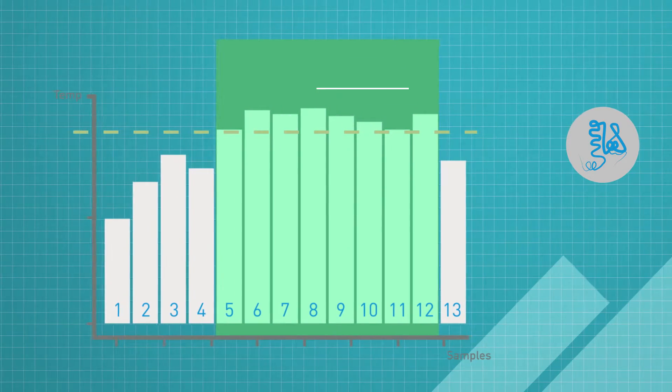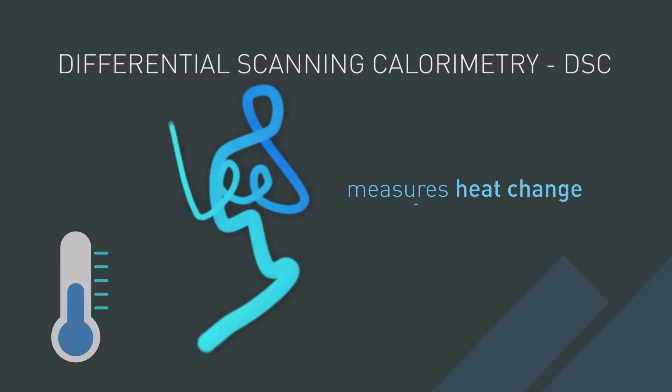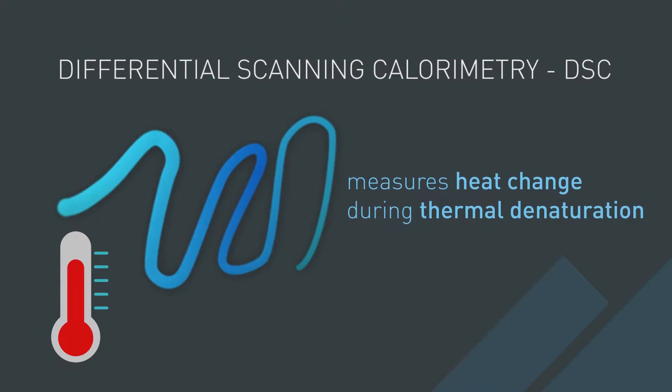DSC works by measuring the heat change of protein unfolding during thermal denaturation.